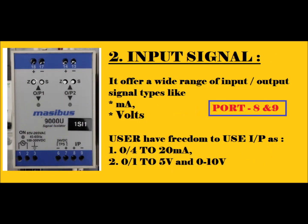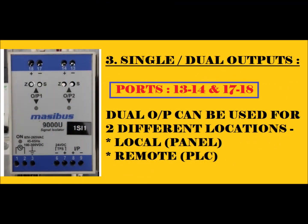Next is the Input Signal. The Signal Isolator accepts a wide range of input signals — generally milliamps or voltage. Port number 8 and 9 are connected to positive and negative, because incoming signals are generally DC and connecting positive and negative terminals correctly is very important. Input range is 0–20mA or 4–20mA, and voltage is 1–5V or 0–10V.